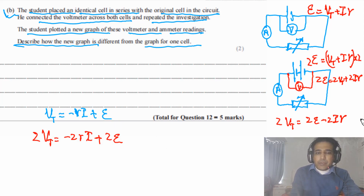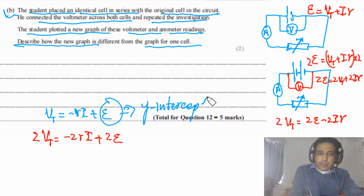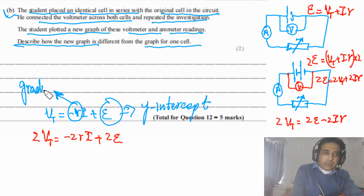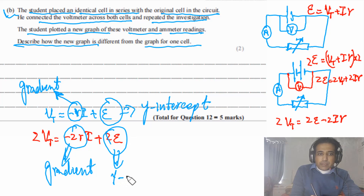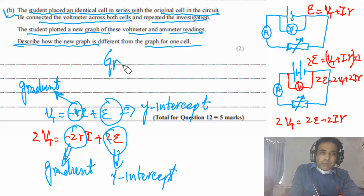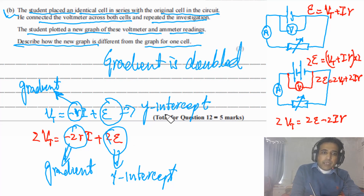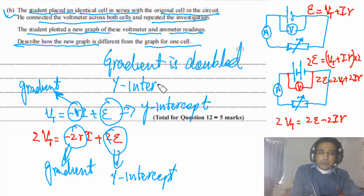From the comparison: for one cell, y-intercept = E and gradient = −r. For two cells, y-intercept = 2E and gradient = −2r. So the gradient is doubled — the line is steeper — and the y-intercept is also doubled. The question asks you to describe, not sketch, so you simply state: gradient is doubled and y-intercept is also doubled.